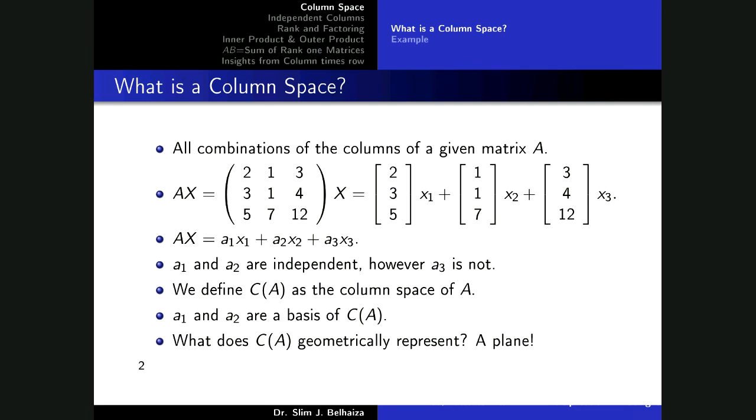What is a column space? Remember the matrix is a kind of an array of numbers and you have a number of rows, a number of columns. The column space defines all combinations of the columns of a given matrix. For example, if you multiply a matrix A by a vector x, you can write it this way as you see here we have separated the columns in matrix.